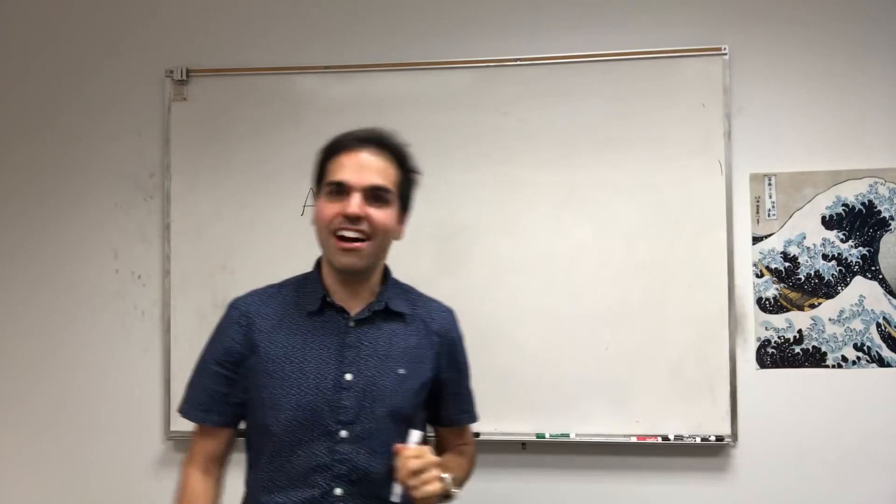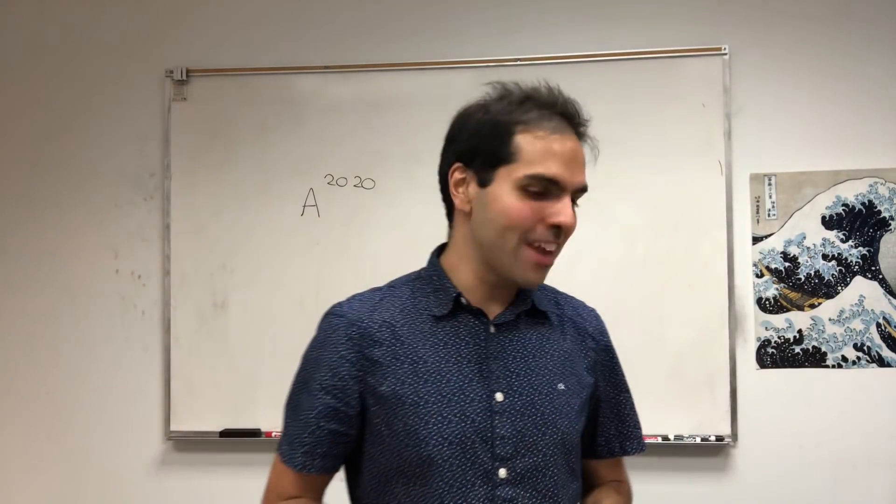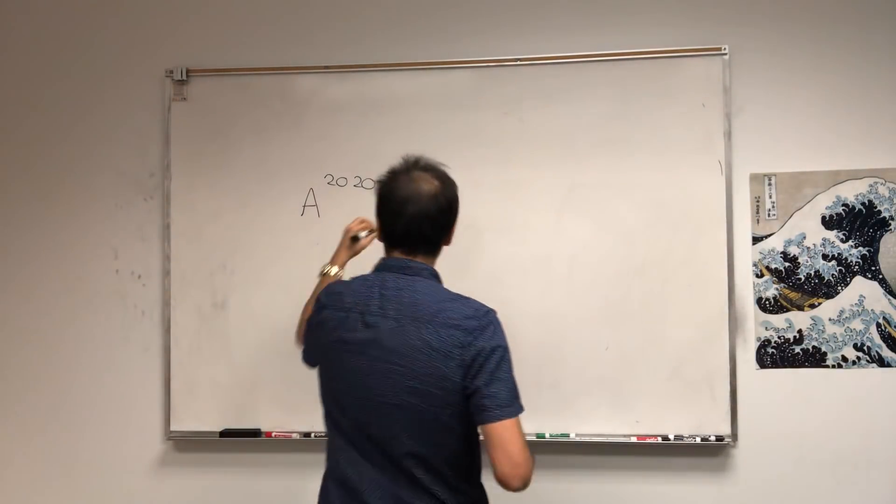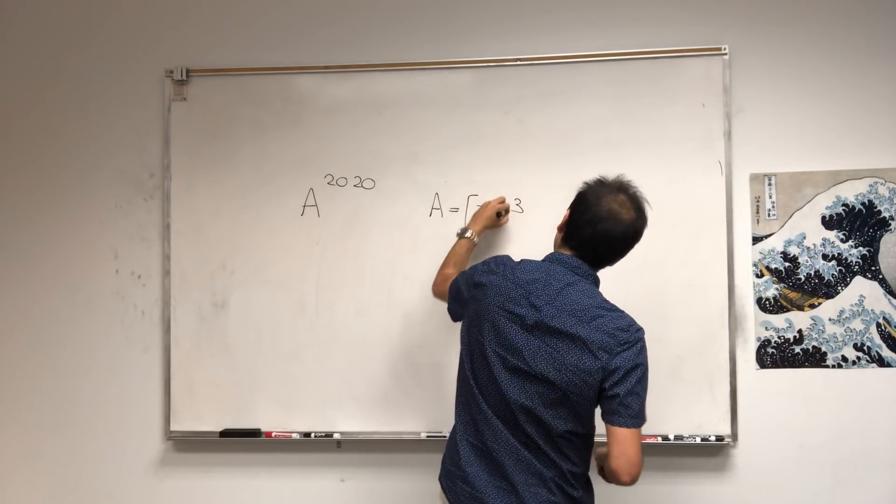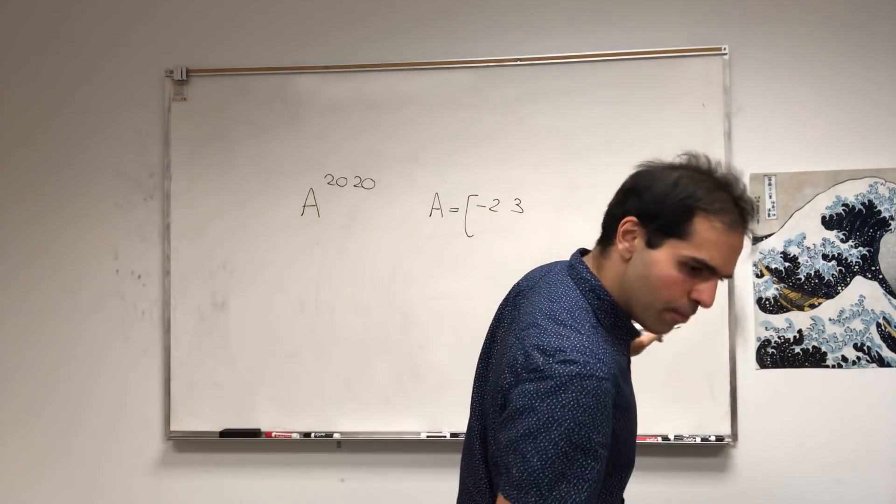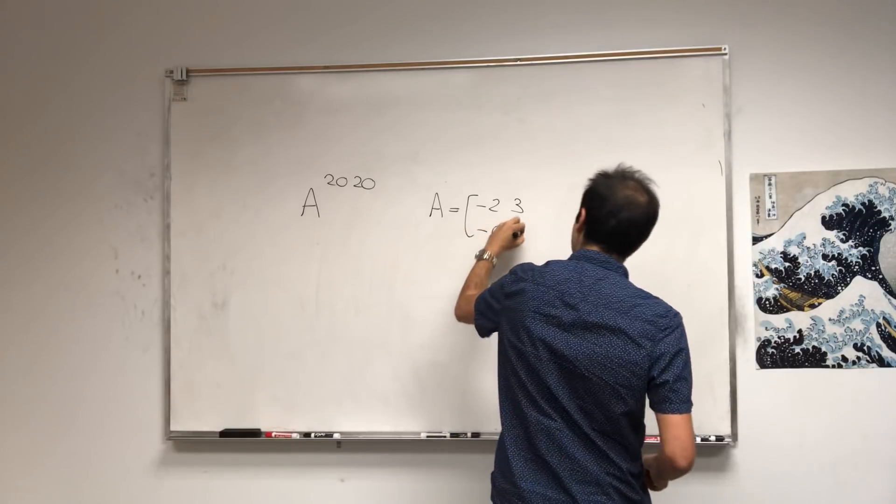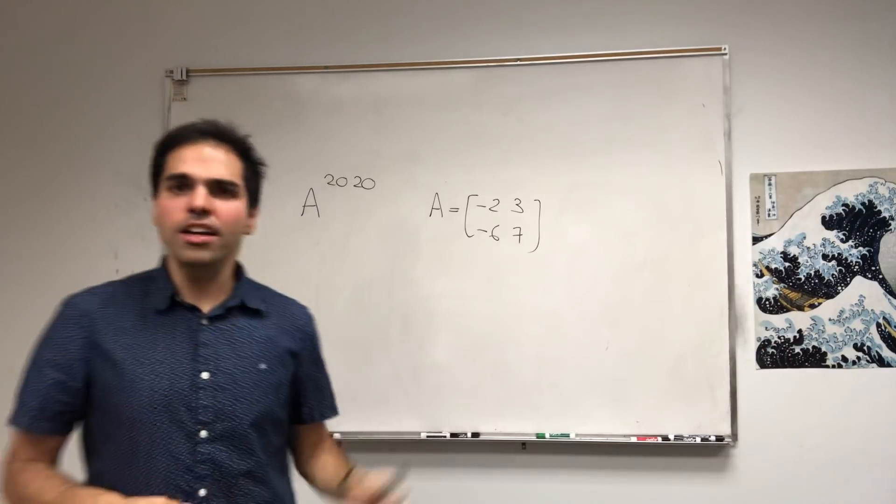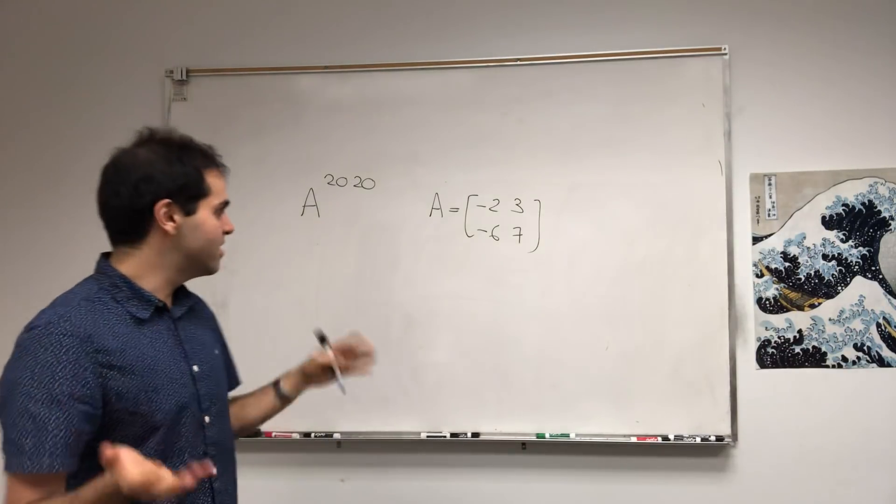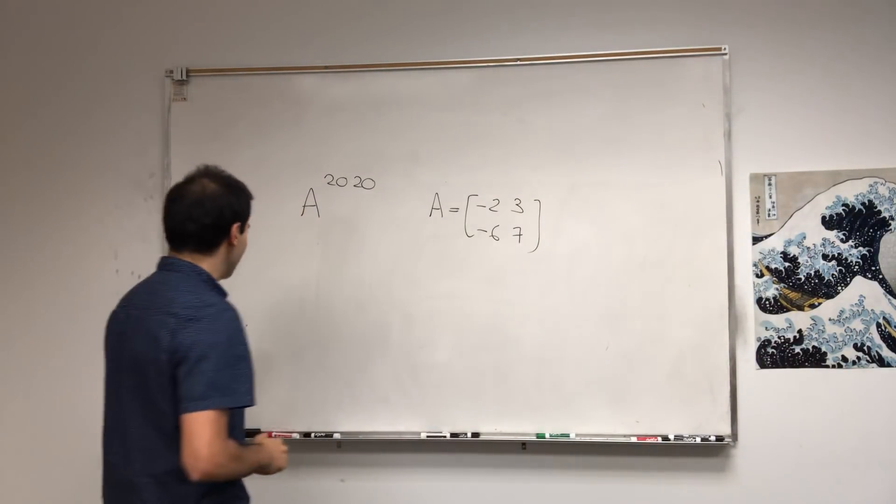I bet if you take linear algebra, your professor will probably ask you about that. So here's the matrix in question: A = [-2, 3; -6, 7]. And remember, to calculate a matrix power, it's good to diagonalize this matrix. So let's diagonalize A.